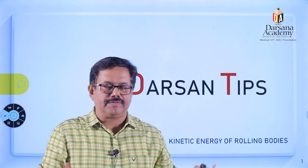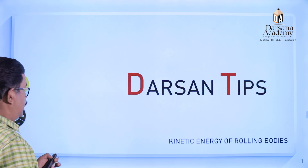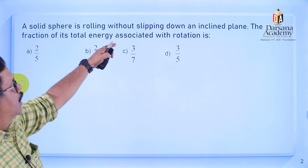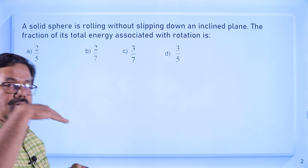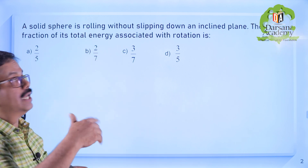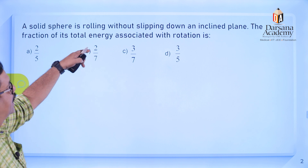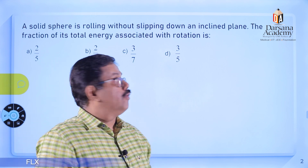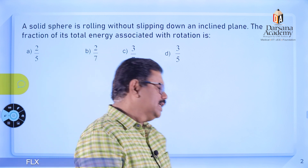We are going to find the Total Kinetic Energy of Rolling Bodies and solve questions without memorizing all the equations. Here is the first question: A solid sphere is rolling without slipping down an inclined plane. We need to find the fraction of its total energy associated with rotation.